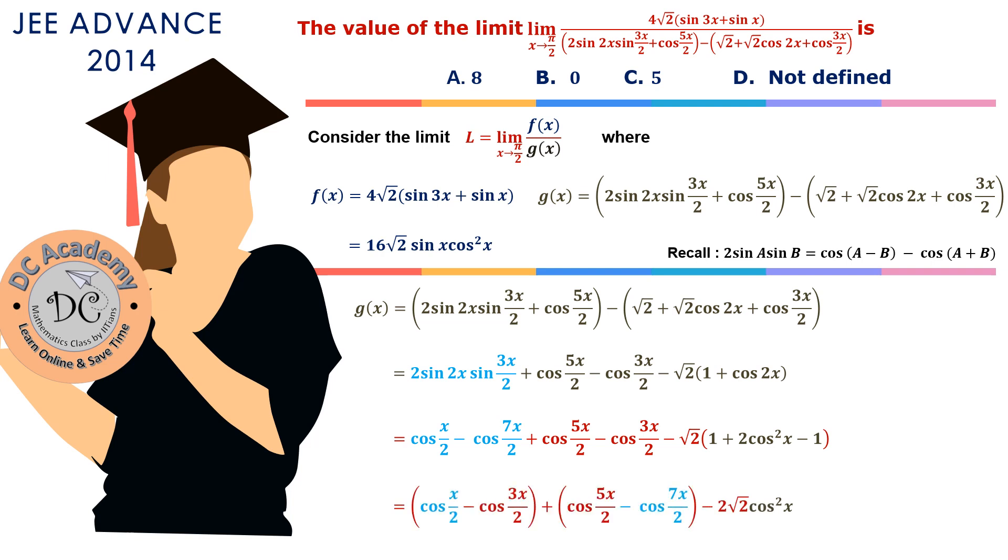Also, now we write down in different pairs: cos(x/2) and cos(3x/2) together, cos(5x/2) and cos(7x/2) together. These are the steps we are performing. Again, we need to apply the sum to product rule.